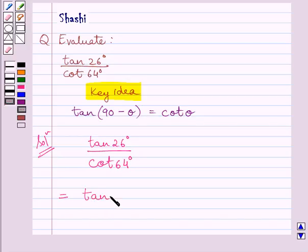So, we can write tan(90 degrees minus 64 degrees) upon cot 64 degrees.